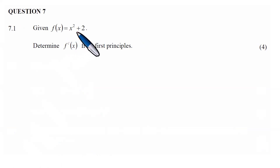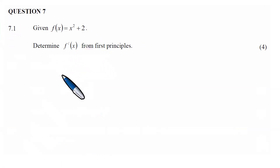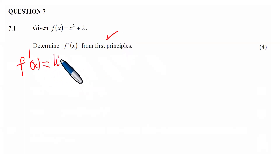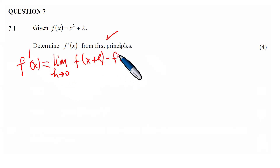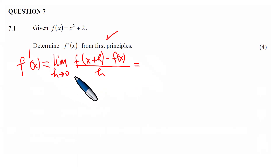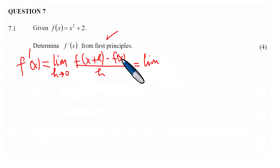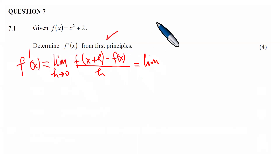You have been given the quadratic function f(x) = x² + 2, and we need to determine f'(x) from first principles. The minute the examiner says first principles, you write down the formula. This is the limit as h approaches zero of f(x+h) minus f(x), all over h. f'(x) is what we call the derivative — the slope, the gradient of the function at any point.